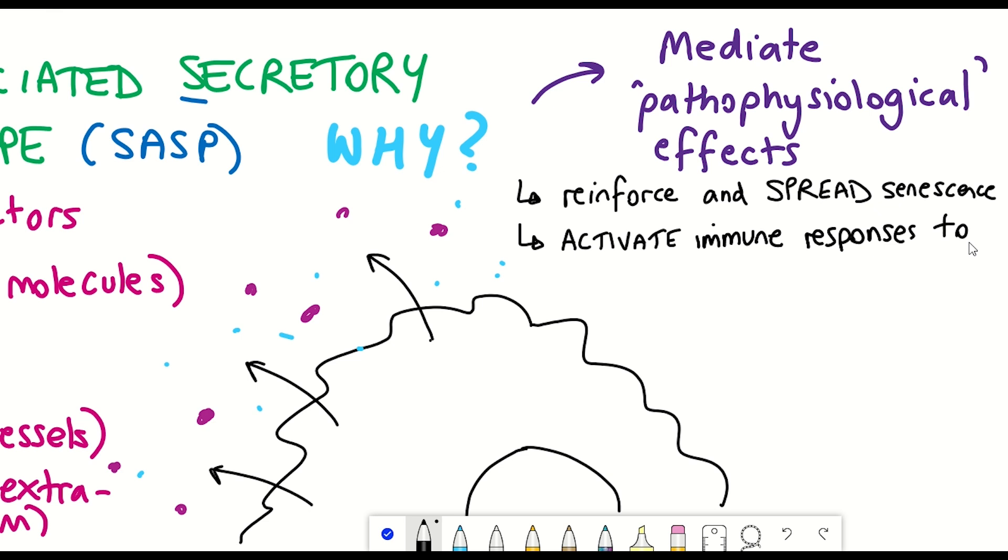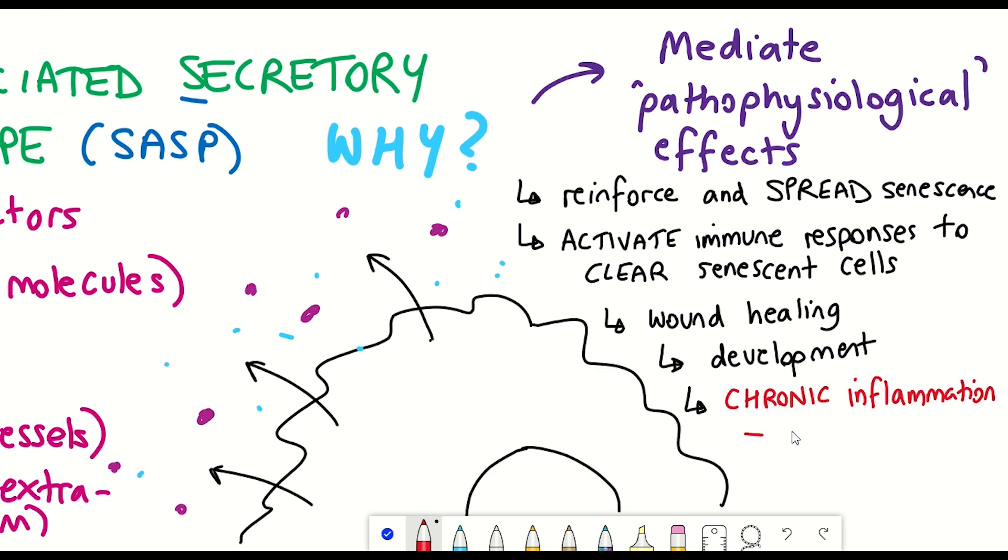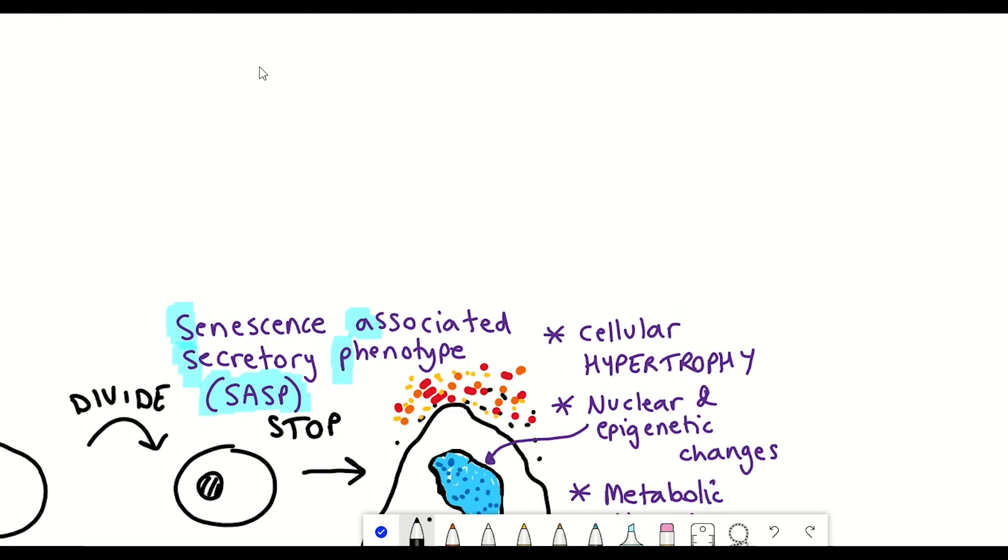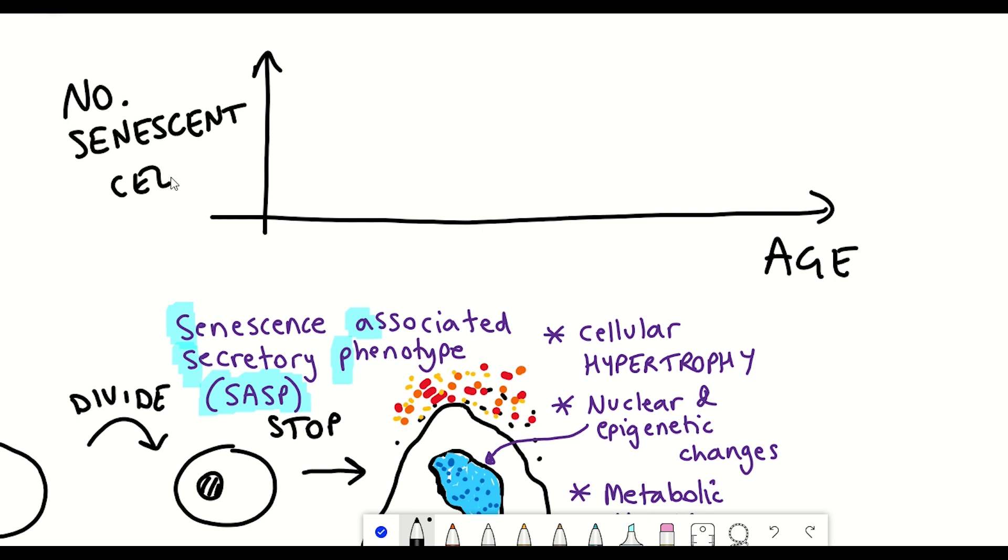Moreover, it can be used to activate the immune responses to help clear the senescent cells and get rid of them. And whilst this has been shown to be useful in wound healing and development, impairments in the clearance of senescent cells can result in chronic inflammation, which could have deleterious pro-aging effects. And indeed, it's been seen in both mice and in human tissue that senescent cells accumulate with age.